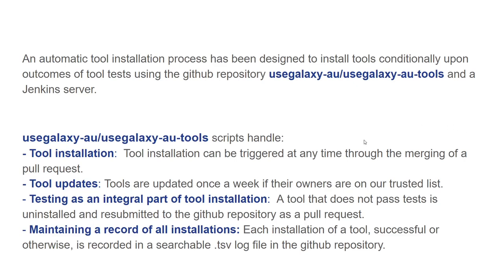Tool installation can be triggered at any time through the merging of a pull request that will send a webhook to the Jenkins server. Tools are updated once a week, subject to their owners being on a list of trusted owners.